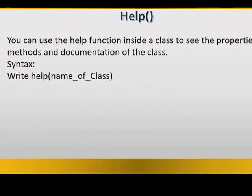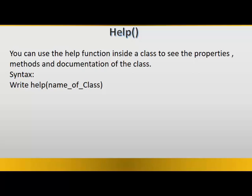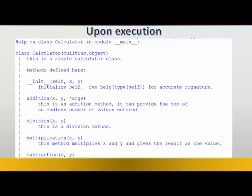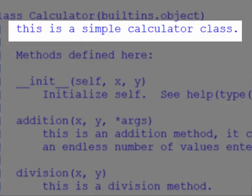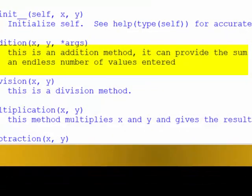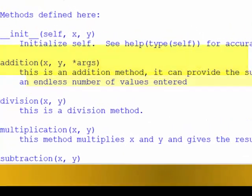You can also use help function inside your class and the syntax of such process is writing down the term help followed by the name of the class in between parentheses. So here we have help and calculator which is the name of the class. You can see that the doc string here is written in every method and there are other help strings that are written by default.